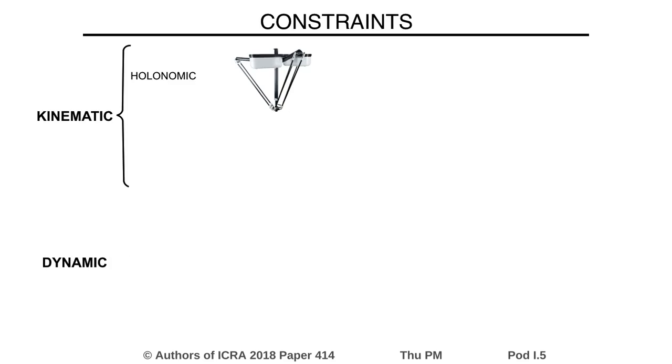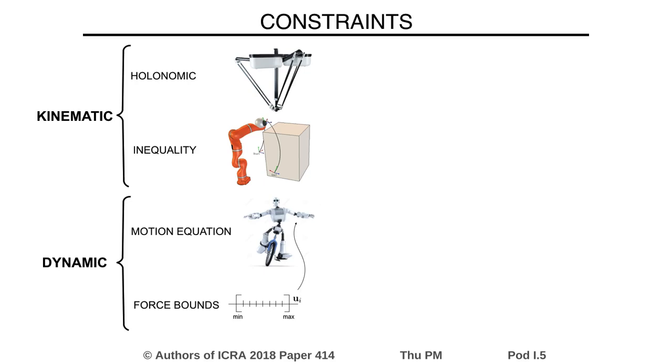Kinematic constraints involve holonomic constraints like loop-closure equations and inequality constraints like obstacle avoidance. Dynamic constraints take into account the equations of motion and the force bounds of the robot. We would like to generate trajectories satisfying all these constraints simultaneously.